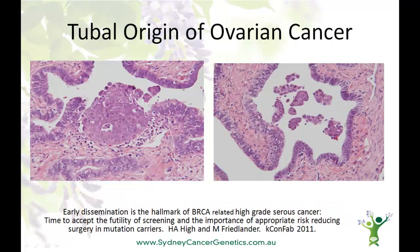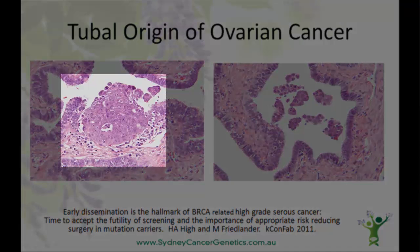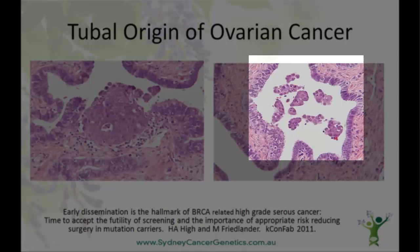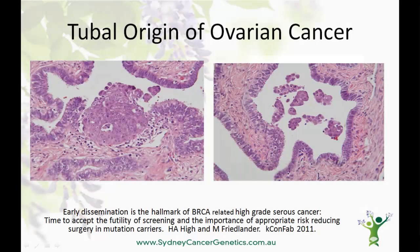These are some slides I presented at a conference with a colleague of mine. They were taken from a woman who had a risk-reducing salpingo-oophorectomy over the age of 55, when she found out from her family history that there was a mutation in the BRCA1 gene. She felt completely well and had no signs or symptoms of ovarian cancer. However, if you look closely, you'll see this is actually a very small ovarian cancer invading into the lining of the fallopian tube. On this side is a group of cancer cells floating free and surrounded by a fairly normal-looking fallopian tube.